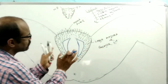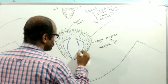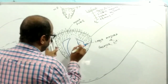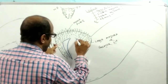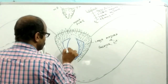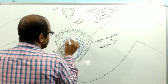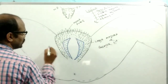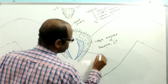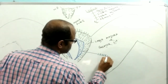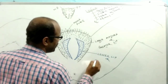In labia majora, only the inner side is provided with glands. But this lesser leaf is highly pigmented on both sides. This is known as the lesser leaf or labia minora.